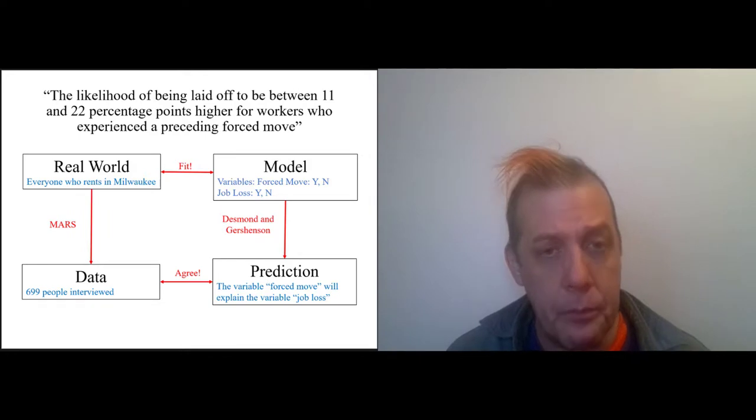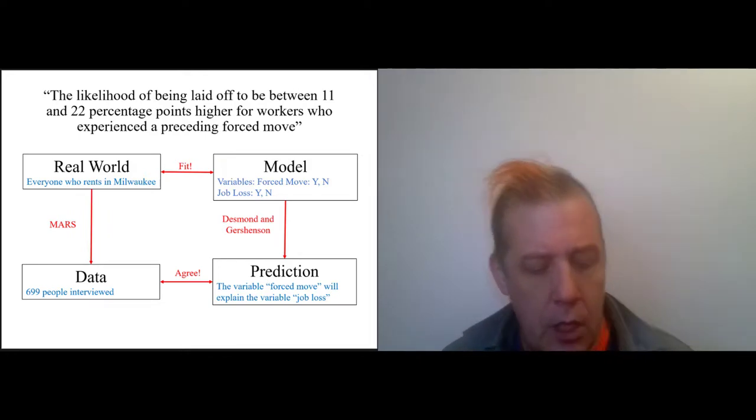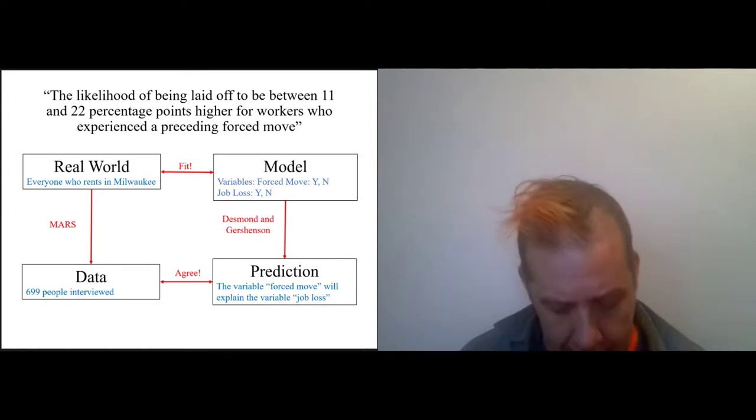This is then used to make a prediction. The prediction is that the variable 'forced move' will explain the variable 'job loss.' So what we're doing here is actually creating a causal model, and a causal model is one of the hardest things in science, especially social science, to develop.